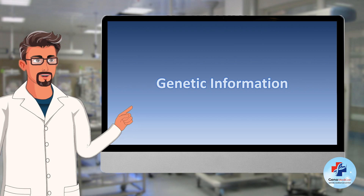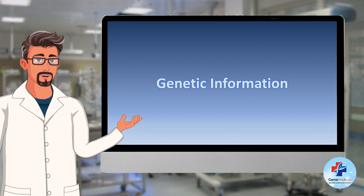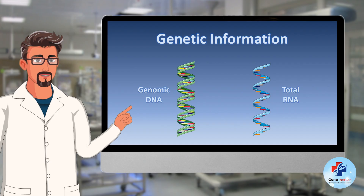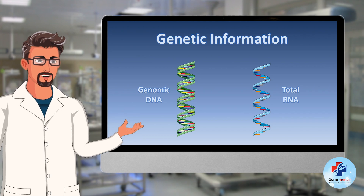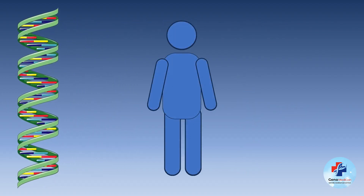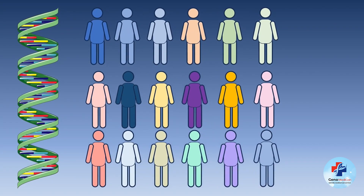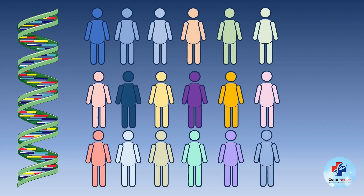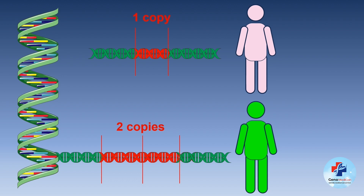The genetic information obtained depends significantly on the type of disease or test you are conducting, but it falls into two main categories: genomic DNA and total RNA from the subject's cells. Genomic DNA is primarily employed to identify alterations in the genetic sequence of individuals. These alterations may vary in size and shape, from small variations such as single nucleotide polymorphisms to large modifications that can include deletion or duplication of segments of the genome.